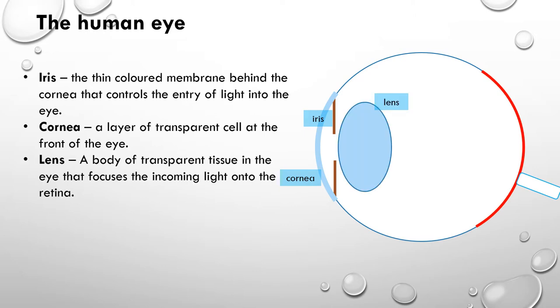Then we have the lens behind the pupil or behind the iris. The pupil is the hole in the middle of the iris. It's used to focus light that comes into the eye and focus it on the back of the retina.